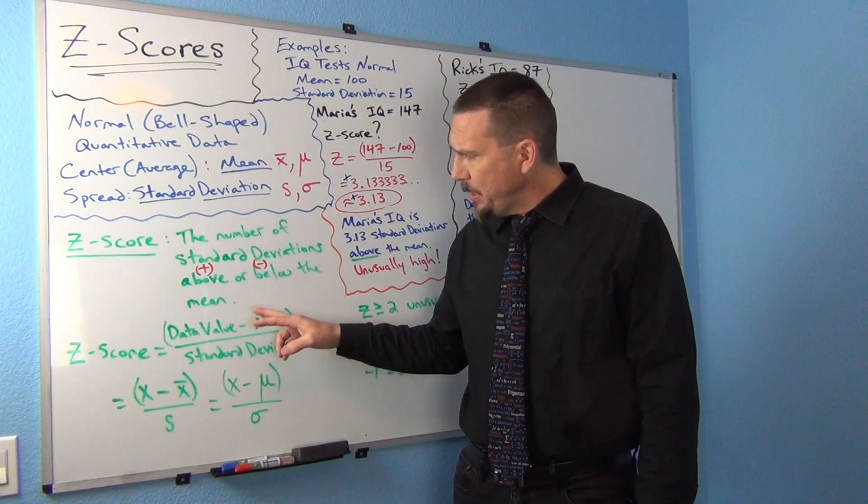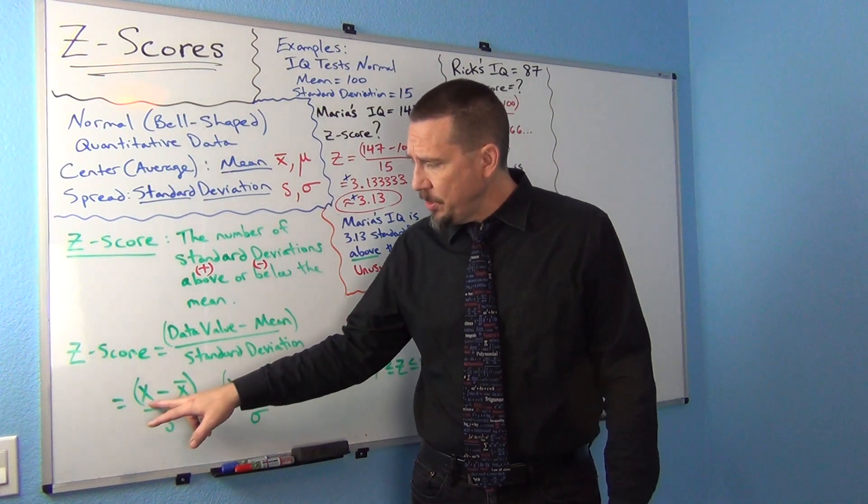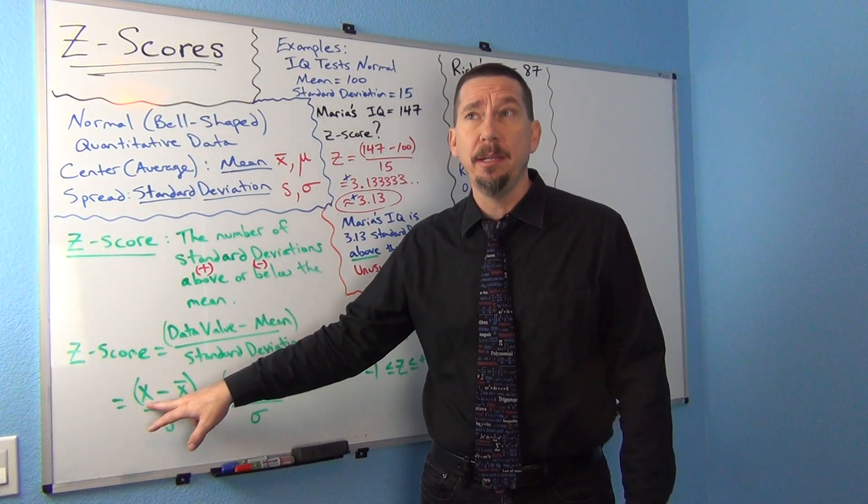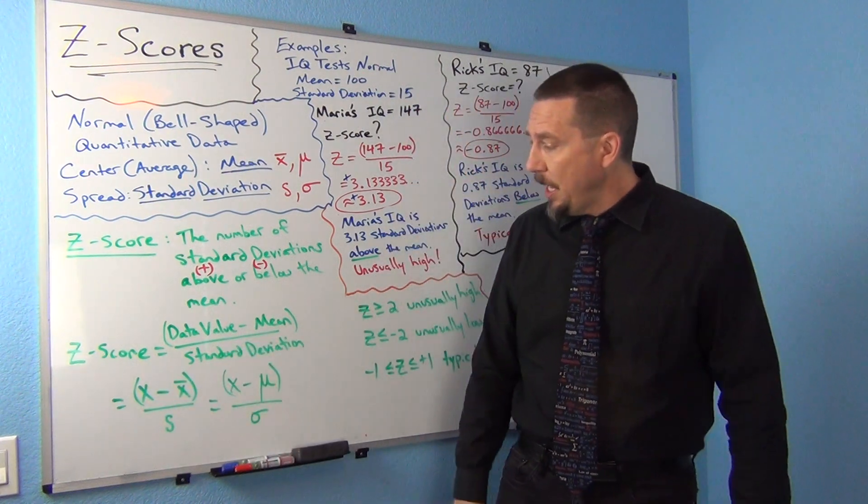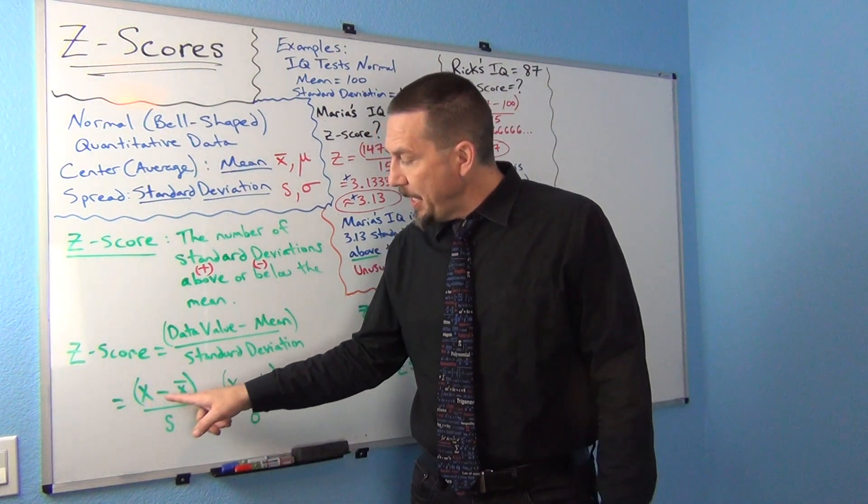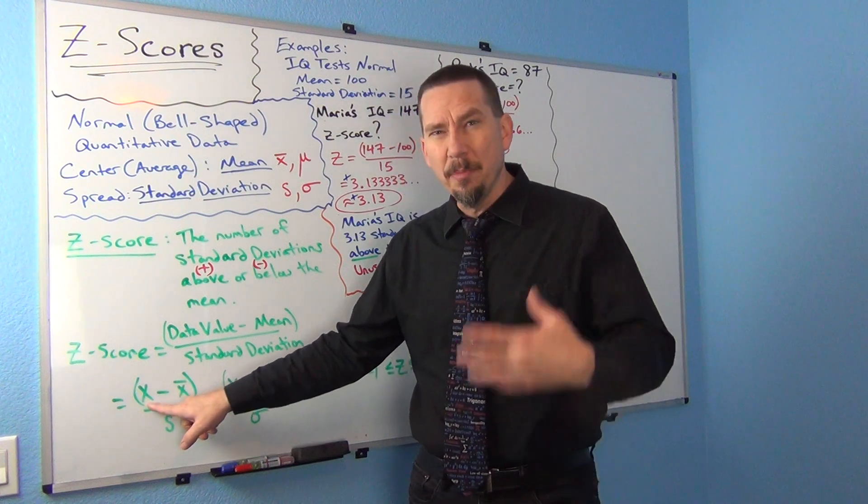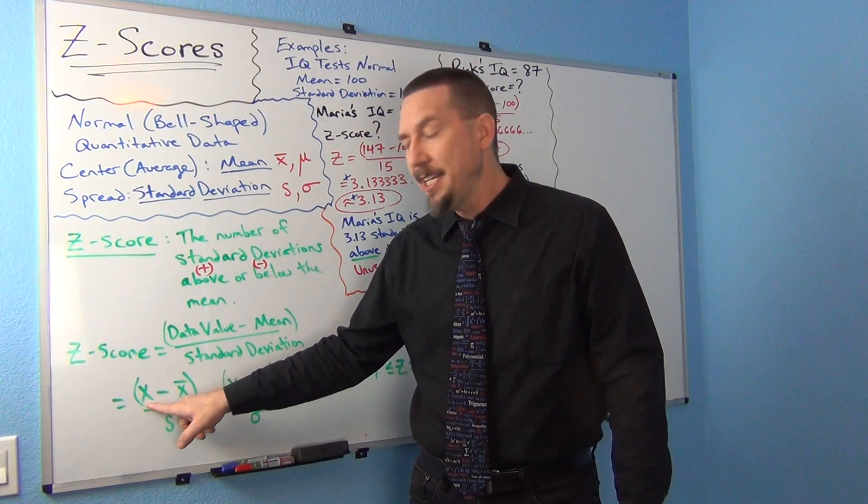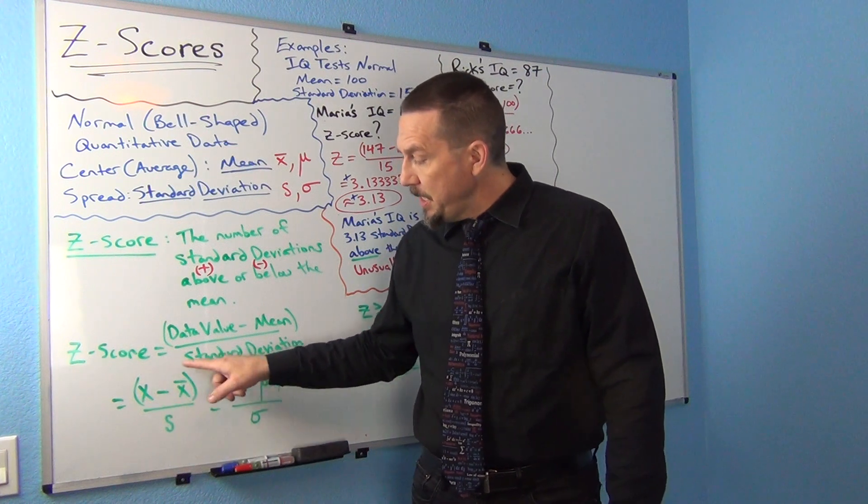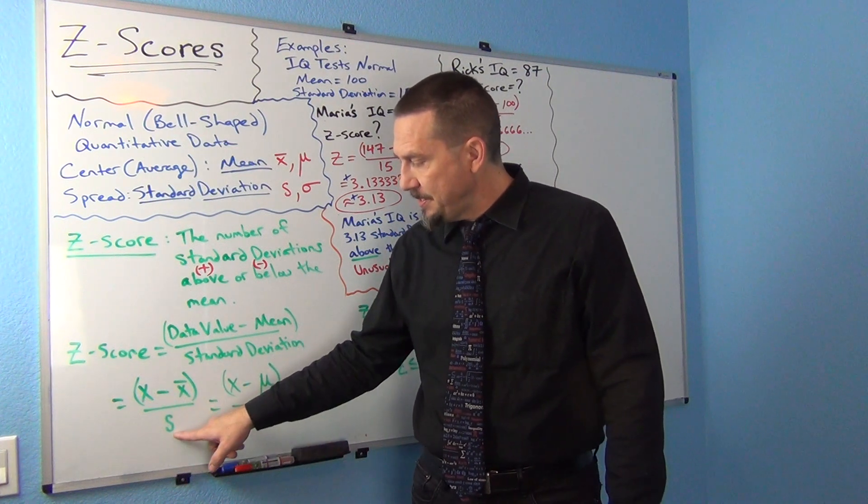The data value is sometimes denoted as an X. If you remember when we were calculating mean and standard deviation, I was using the letter X. X minus the mean. So the X is like your marathon time, the data value that you're looking at.